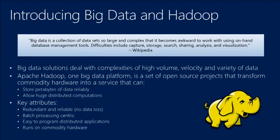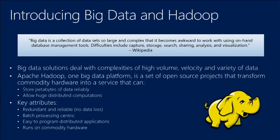Apache Hadoop is one big data platform. It's a set of open source projects that allow transforming commodity hardware — simply storage servers — into a service that can store huge volumes of data and allow huge distributed computations to take place. Jobs are sent across to every node within a cluster and down to the file systems, and processing happens in parallel.